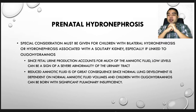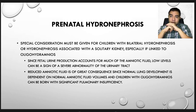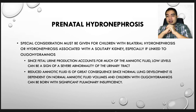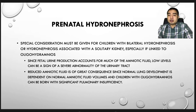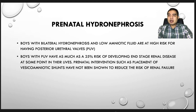Special consideration must be given for children with bilateral hydronephrosis or hydronephrosis associated with a solitary kidney, especially if linked with oligohydramnios. Since fetal urine production accounts for most of the amniotic fluid, low levels can be a sign of severe urinary tract abnormality. Reduced amniotic fluid is of great consequence since normal lung development depends on normal amniotic fluid volumes, and children with oligohydramnios can be born with significant pulmonary insufficiency. Boys with bilateral hydronephrosis and low amniotic fluid are at high risk for posterior urethral valves (PUV), and boys with PUV have as much as a 25% risk of developing end-stage renal disease. Prenatal intervention such as vesicoamniotic shunts has not been shown to reduce the risk of renal failure.